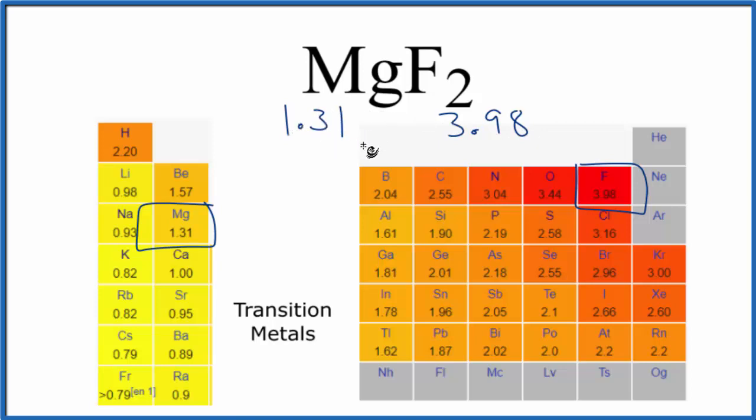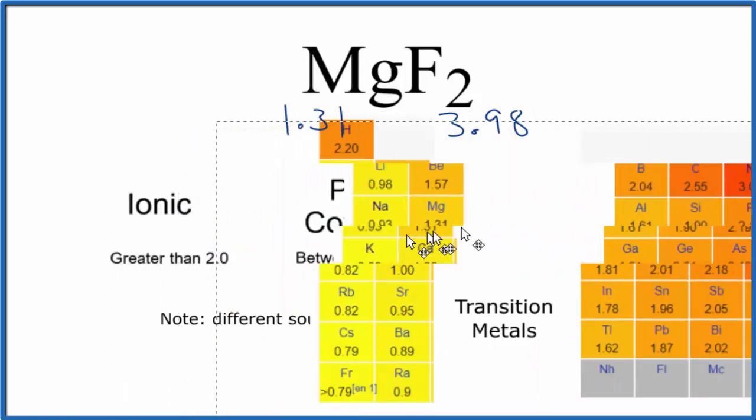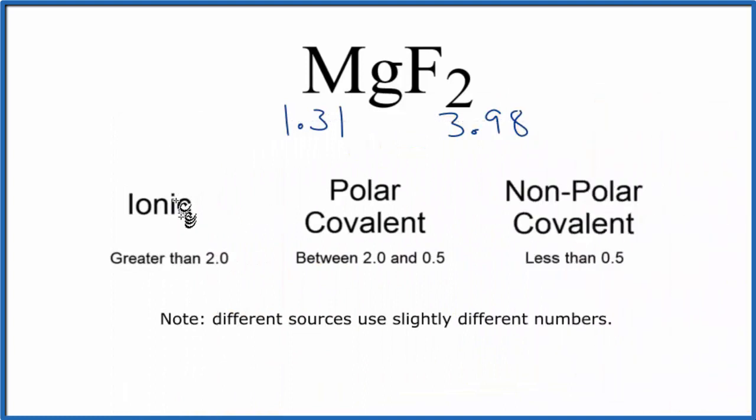3.98 minus 1.31, that's greater than 2. So magnesium fluoride, that'll be an ionic compound.